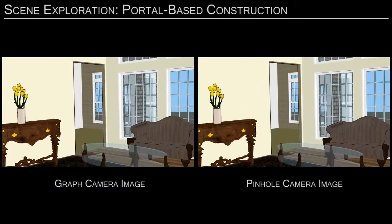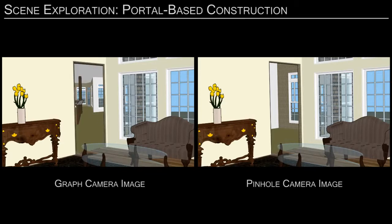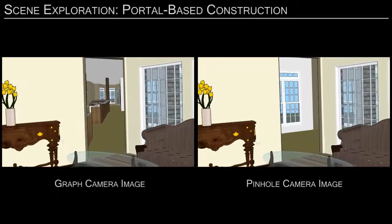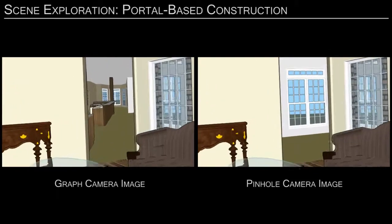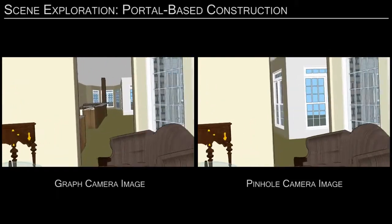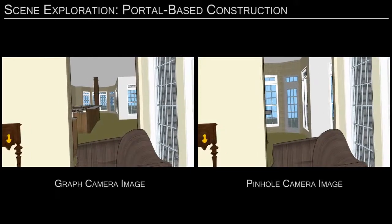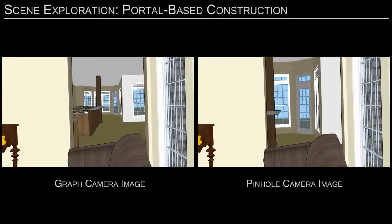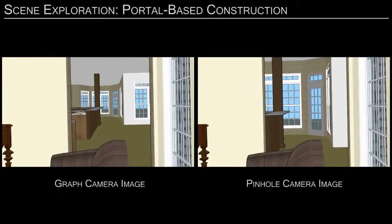We propose scene exploration using a graph camera constructed to sample multiple scene regions simultaneously. Here, the graph camera rays that hit the door portal are bent to capture a better view of the adjacent room. As the user approaches the portal, the graph camera morphs into a pinhole for a smooth transition into the adjacent room.